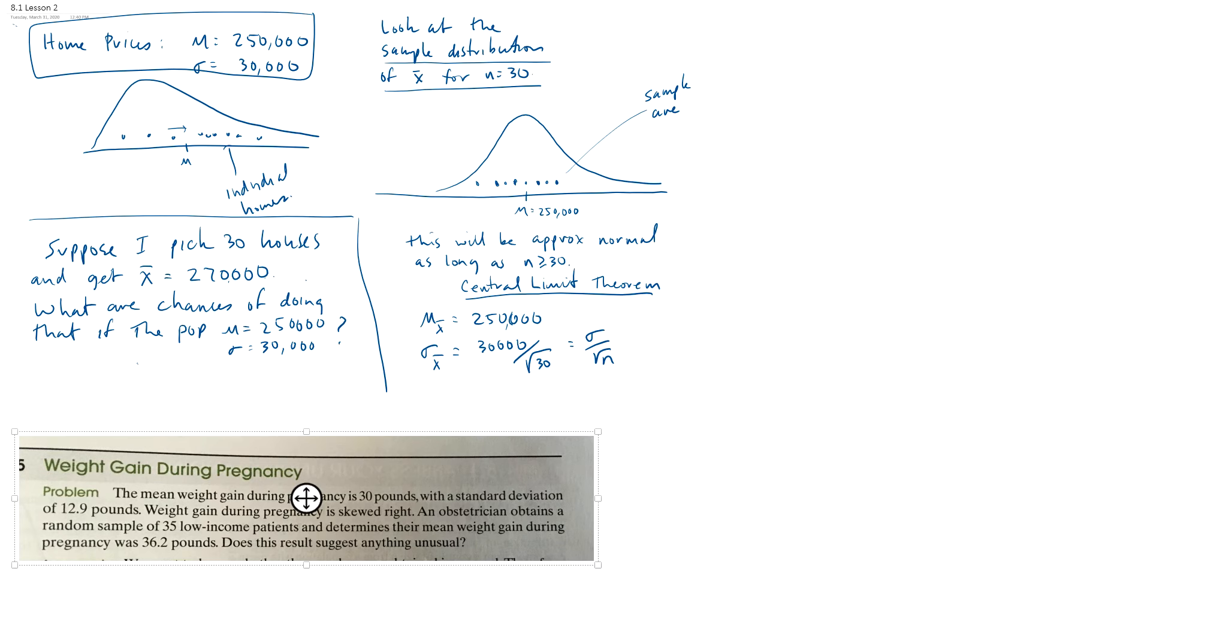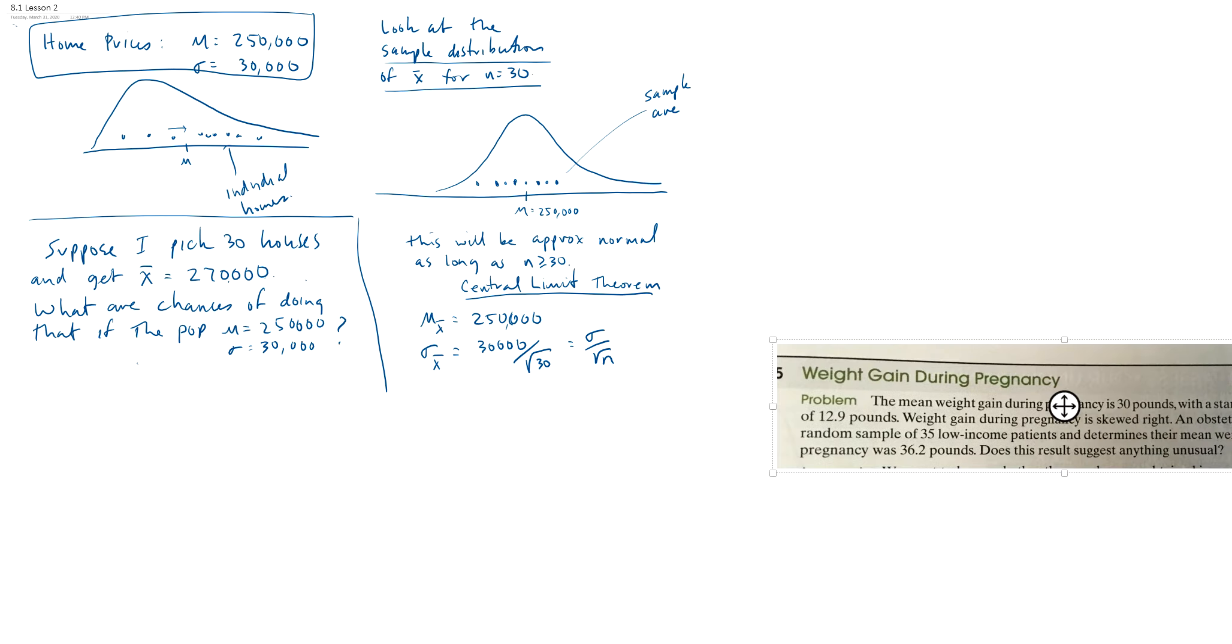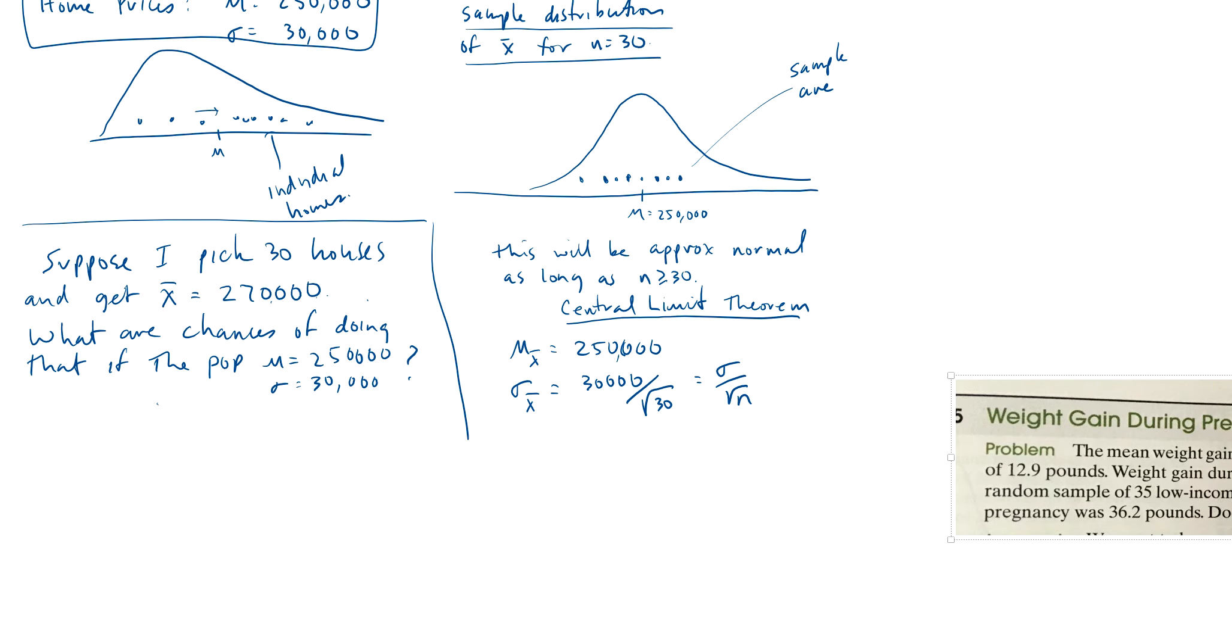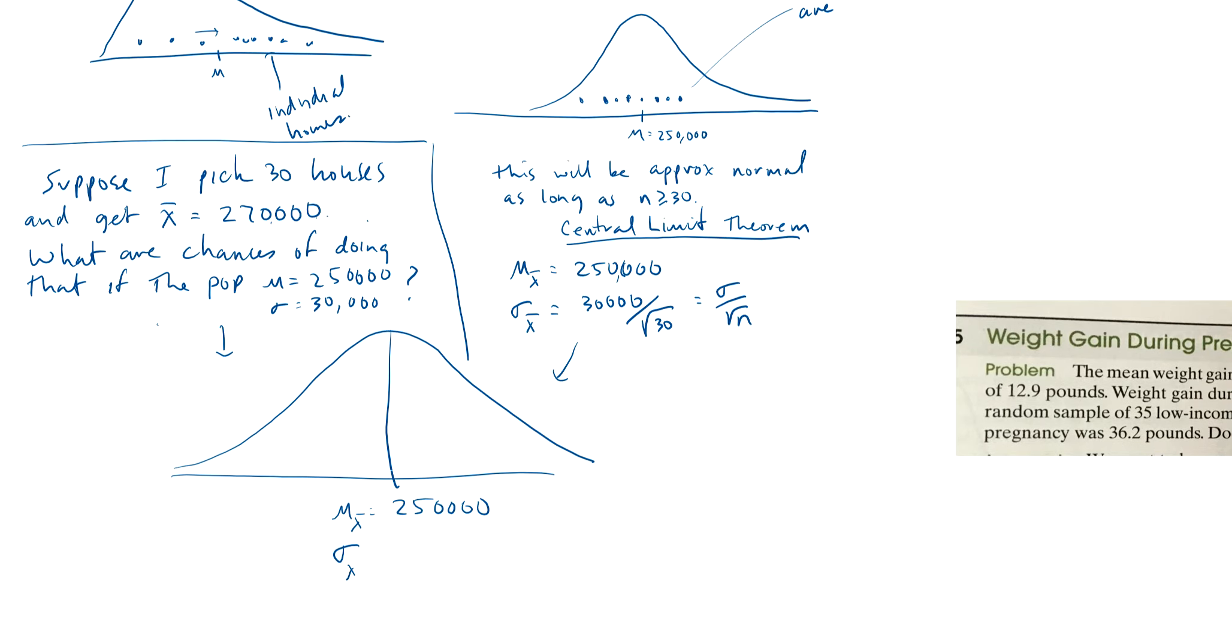Let's go up here. Let me move this out of the way. Well, let's take a look at this. Let's look at the distribution of all samples of size 30. Well, that's this over here. So, I'm just going to redraw it down here. So, I know that the average is going to be 250,000. That's this right here. And the standard deviation is going to be 30,000 divided by the square root of 30, which is, let's see here. 5477.